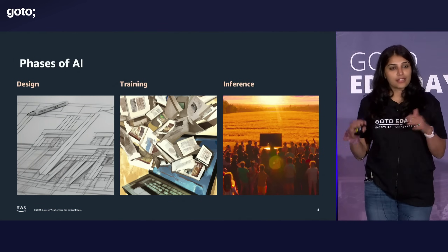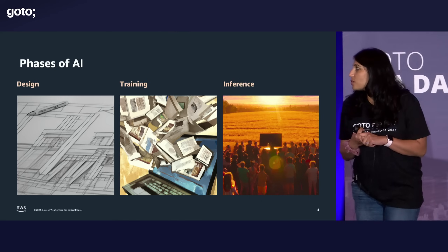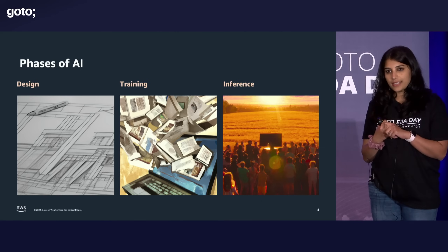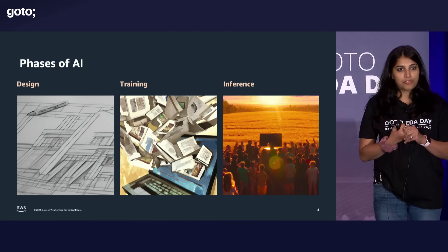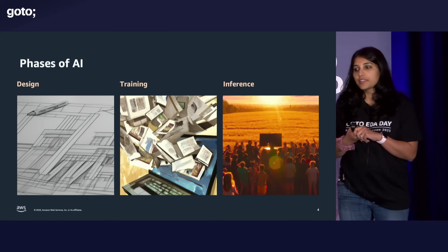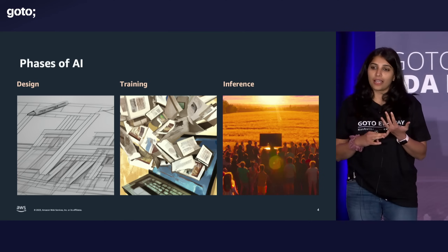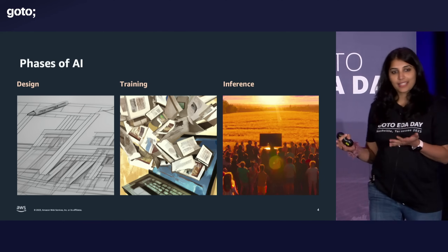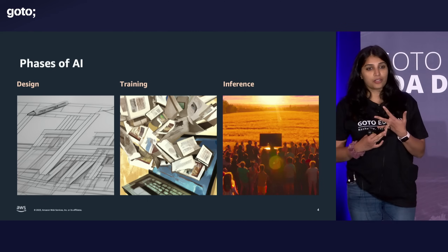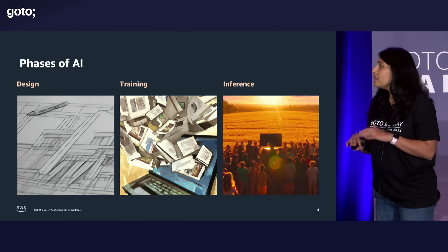Before I get into the serverless aspects of building applications, let's talk about the phases of AI itself. So whenever you want to build a machine learning model, these are the three phases that generally you go through. The first is the design phase. Data scientists pick up large amounts of data, label them, do feature engineering on them, do data transformations, figure out which data is useful, and also figure out what kind of machine learning algorithm works best for the task at hand — whether neural network, regression, or classification algorithms.